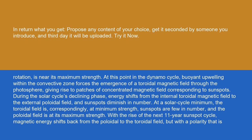During the solar cycle's declining phase, energy shifts from the internal toroidal magnetic field to the external poloidal field, and sunspots diminish in number. At a solar cycle minimum, the toroidal field is correspondingly at minimum strength, sunspots are few in number, and the poloidal field is at its maximum strength.